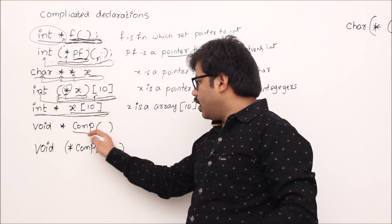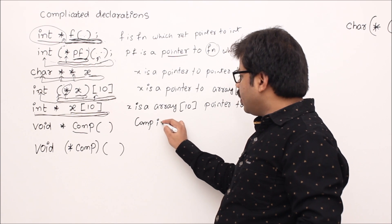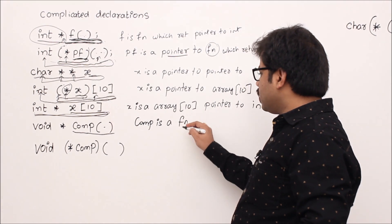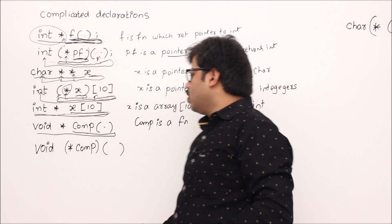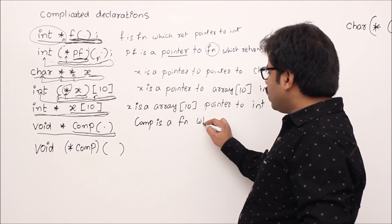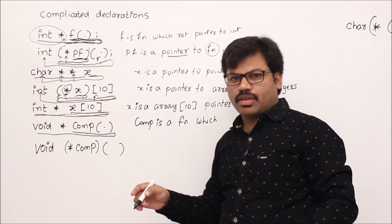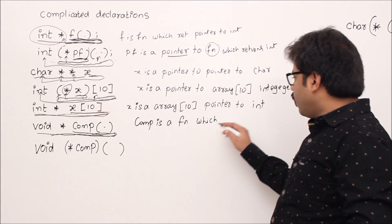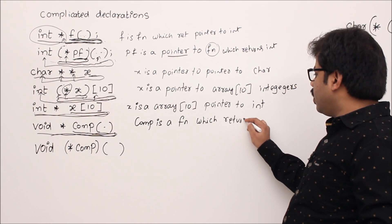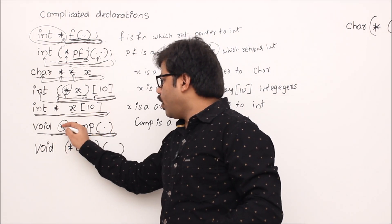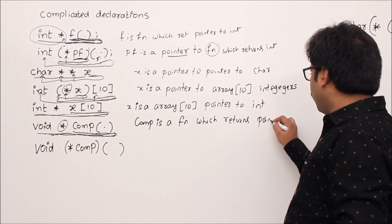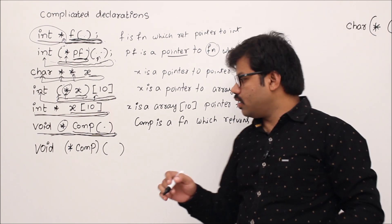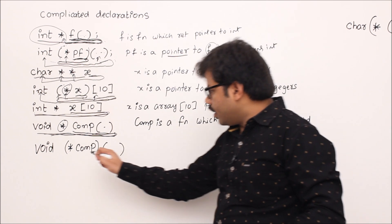'comp is a variable.' We see a function symbol — 'comp is a function.' Go leftmost. A function must have a return type. 'comp is a function which returns' — we see a pointer symbol: 'returns a pointer to void.' So 'comp is a function which returns a pointer to void.'